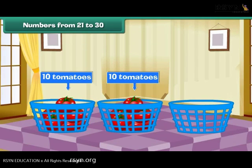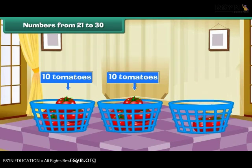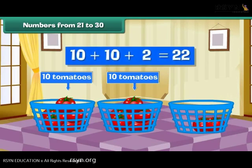Here is an empty basket. Let us place a tomato inside it. We have two tens and one — that is 21 tomatoes. Place one more tomato in the third basket. We have two tens and two — that is 22 tomatoes.